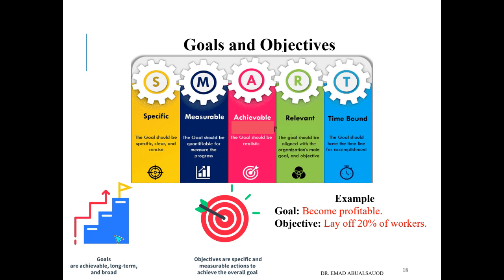Objectives become even more specific. For example, if the goal says you want to become profitable in five years, an objective might be to reduce a specific cost by 20%. That's one type of objective a company or organization could use to achieve that goal.